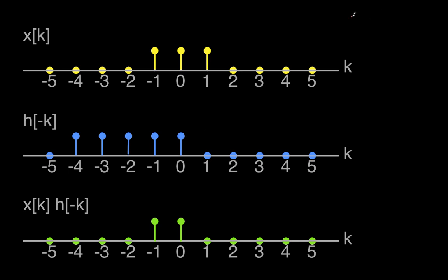Now we look at the case where n equals 0. X of k is 0 for values of k less than negative 1, which means any values of h of minus k get multiplied by 0 as long as k is less than negative 1. Similarly, up here we have zeros. For k equal to 1, h of minus k is 0 and x of k is 1, so that product is 0. So for n equals 0, we have 1 at k equals negative 1 and 1 at k equals 0, giving y of 0 equals 2.